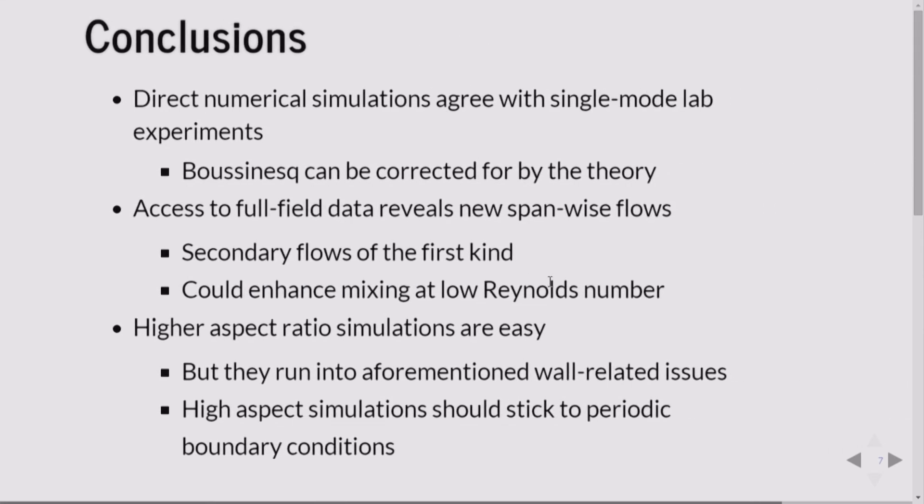So to wrap up, the first thing is that direct numerical simulations that employ the Boussinesq approximation are very good at representing the real results that we get in lab experiments for the single mode Rayleigh-Taylor instability. When we do simulations, we have access to full field data. We can take slices of it or apply other operators to it in whatever way we want. And we can glean new scientific discoveries or we can learn new scientific things about the phenomena because of that enhanced access to data.